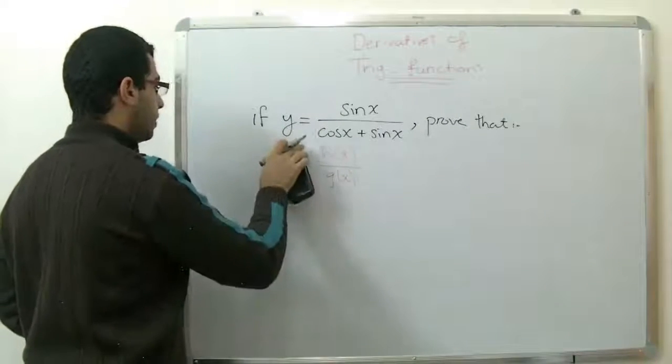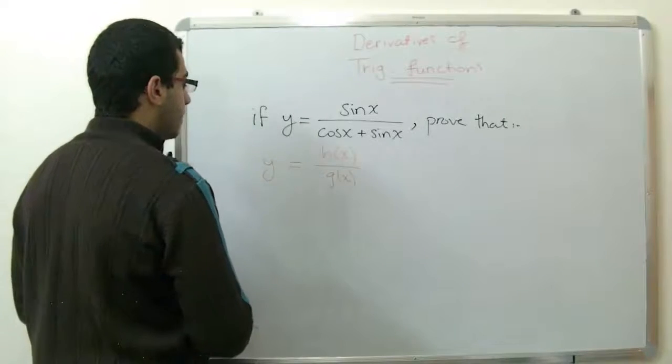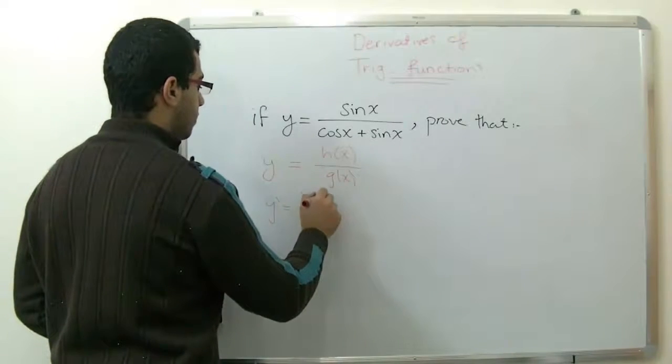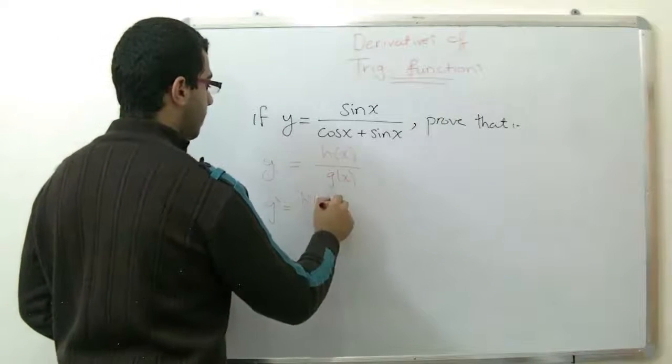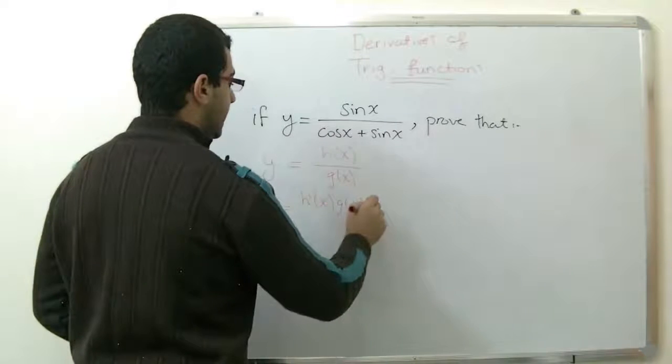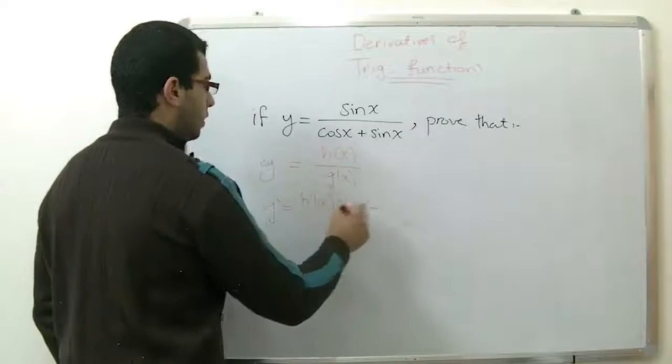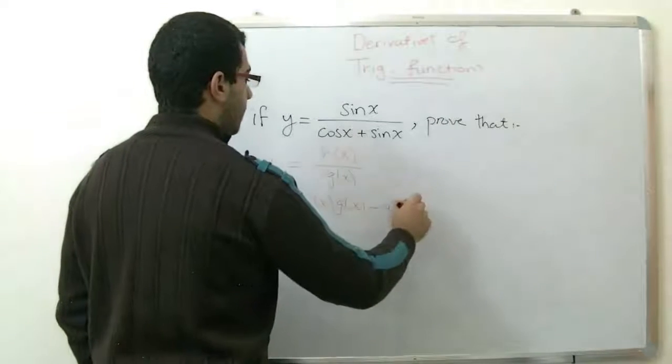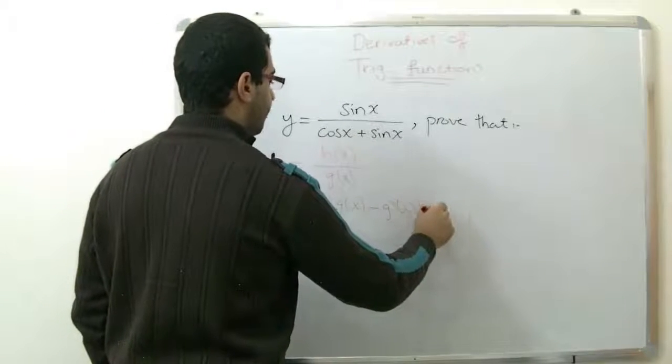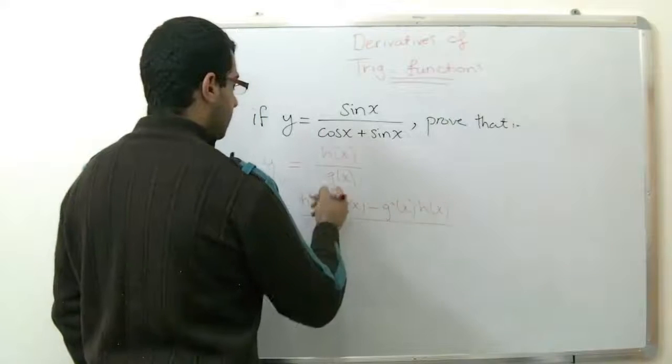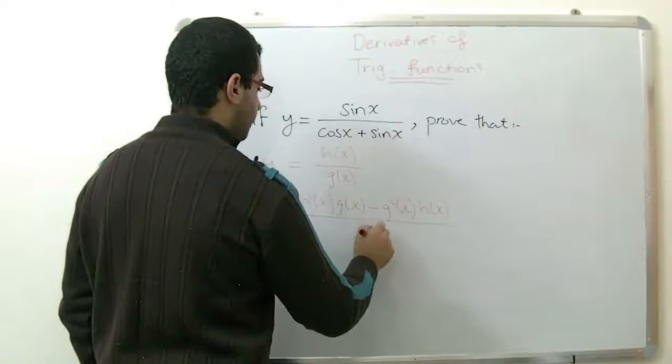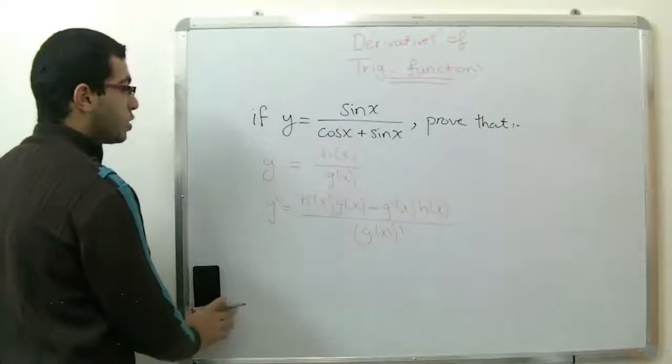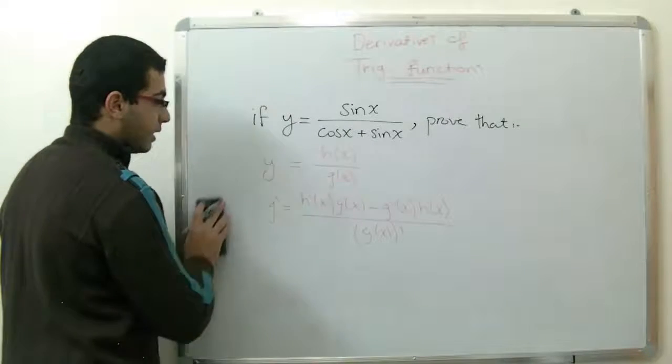If y equals h(x) over d(x), then the derivative equals h dash x, the derivative of the numerator multiplied by the denominator, negative the derivative of the denominator by the numerator, over the denominator squared. So this is what we will do now.